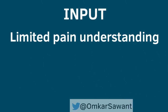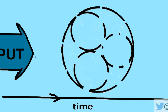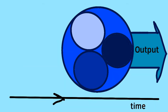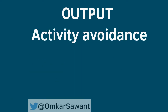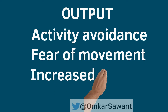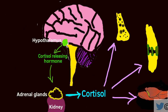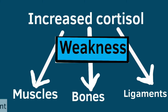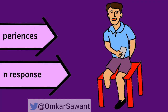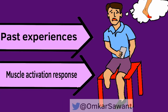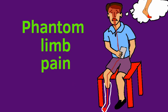Inputs like pain understanding, past negative experiences, and changes in weather may influence the neuromatrix. This may sometimes lead to patterns causing activity avoidance, fear of movement, increased cortisol release causing greater weakness, and longer weakness in muscle, bone, and ligaments. This may justify the rationale for chronic pain. Past experiences and muscle activation response output may also justify the rationale for phantom limb pain sensation.